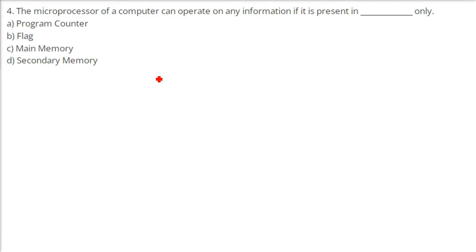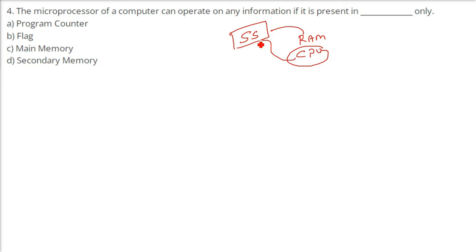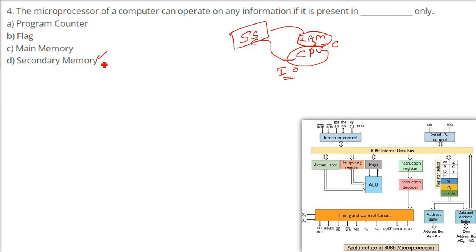The microprocessor of a computer can operate on any information if it is present in primary memory only. In the formation, you have a processor in the CPU, which interacts with cache memory, then RAM, and finally secondary storage — SSD or hard drive. The CPU will only access data from RAM, which is volatile memory. Storage like SSD is non-volatile main storage.